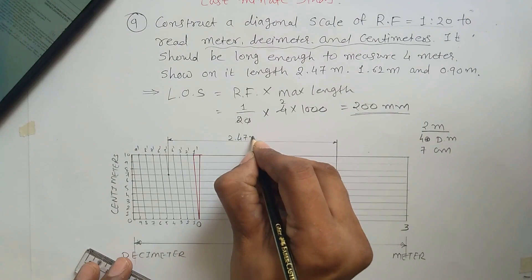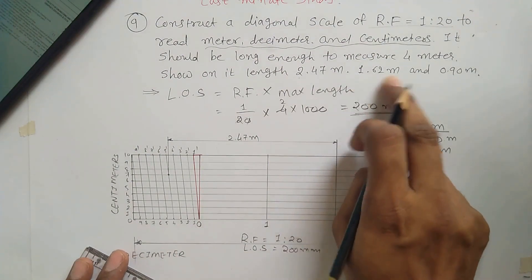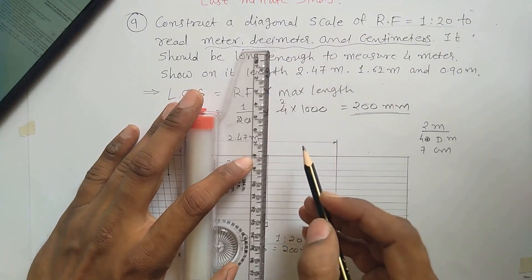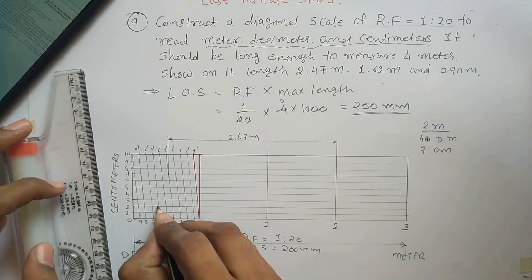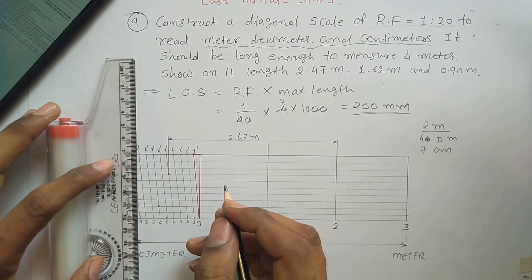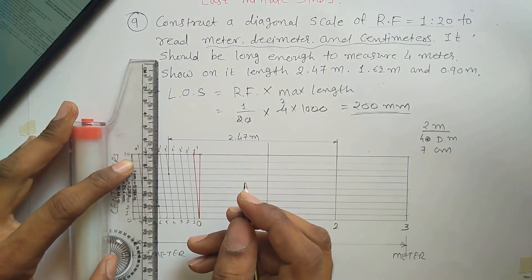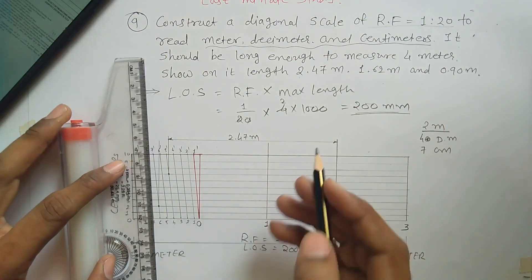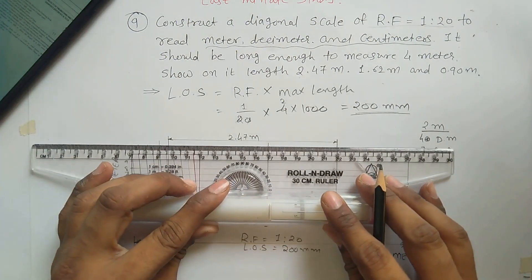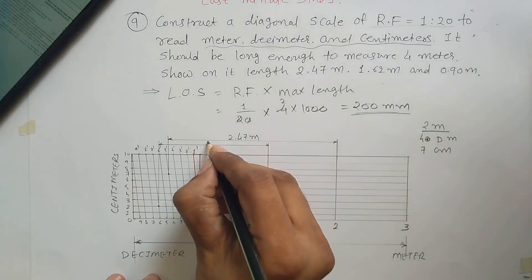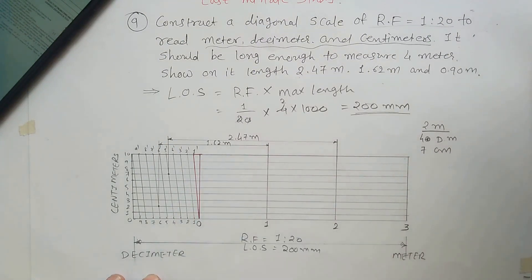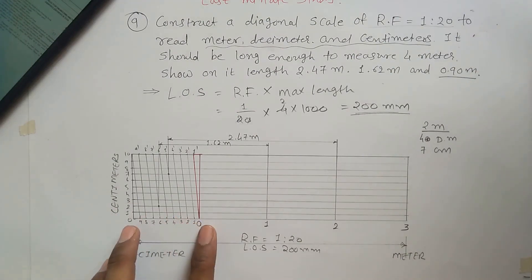Similarly, 1.62 meters means 1 meter, 6 decimeters, and 2 centimeters — locate the intersection point for 62 to get 1.62 meters. Likewise, 0.90 meters is located the same way. These are your answers, and 0.90 meter is left as self-study.